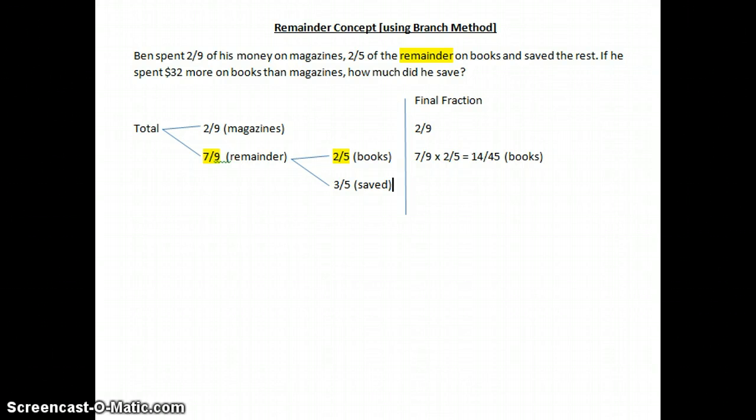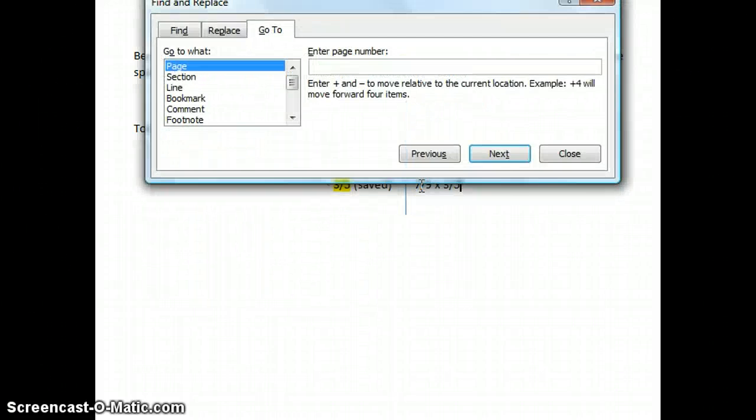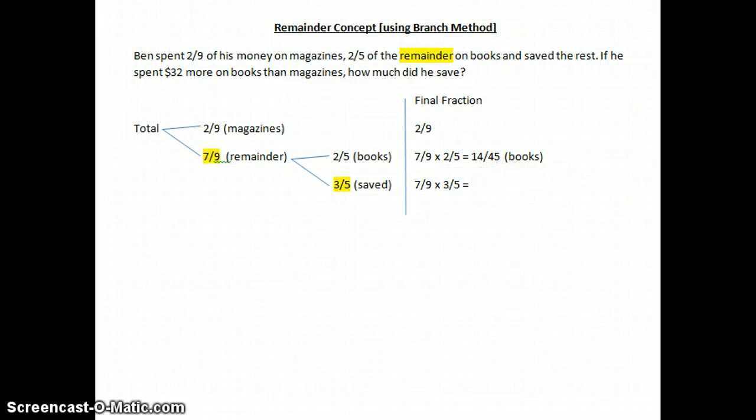And how much is being saved? The final fraction that is being saved is 7 out of 9 multiply by 3/5, and that will give me 21 out of 45. And this is the amount that's being saved. By now you can see that the denominator here is 45, the denominator here is 45, but this fraction denominator is not 45. So I want to change it all to the same denominator.